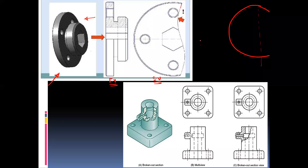The free end line, which is a continuous free end line, is used to show the half part of a symmetric object. We can draw such a line to indicate that the object is symmetric — it has the same feature on the other side of the symmetric axis.